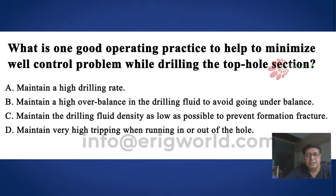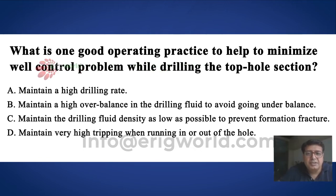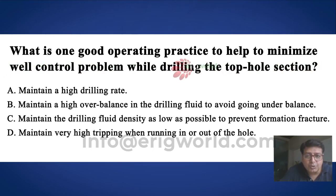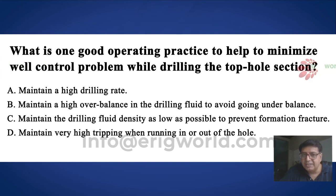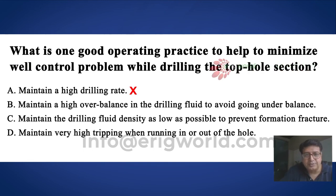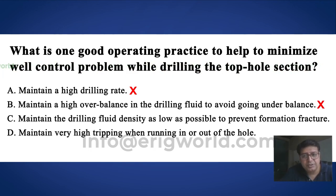Now let's check the answer options. The first answer is 'maintain high drilling rate.' If we maintain a high drilling rate, there will be more cuttings, which will increase BHP. Since we are drilling a tophole section — a weak section — increasing pressure on the formation is not a good idea, so this answer is wrong. The second option is 'maintain high overbalance,' which will again increase the overburden on the formation, so this is also wrong.